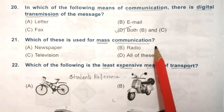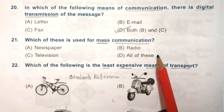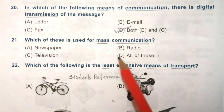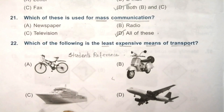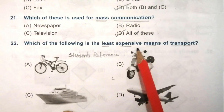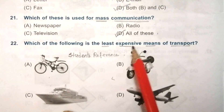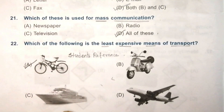Question 21: which of these is used for mass communication? Options are: newspaper, radio, television, all of these. The answer is D — all of these. Question 22: which of the following is the least expensive means of transport? Look at the given options carefully. The answer is A — bicycle.